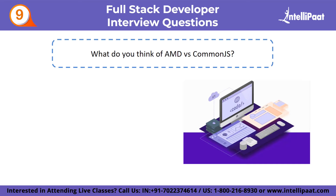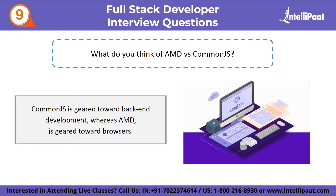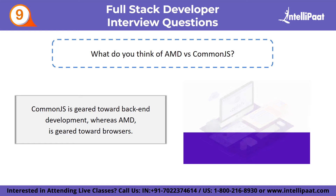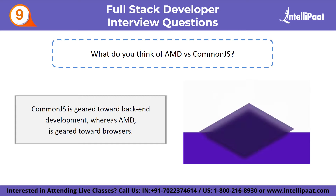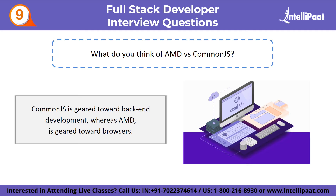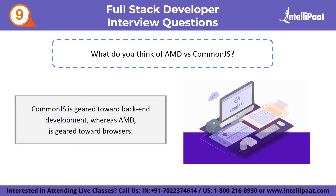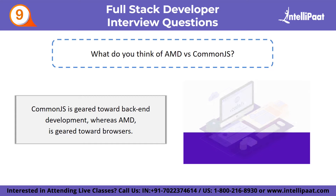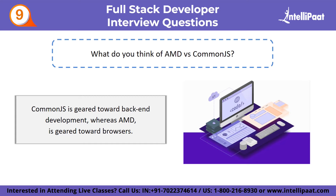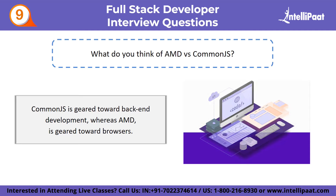Ninth advanced question: what do you think of AMD vs CommonJS? Both are methods for implementing a module system, which was not native to JavaScript until ES2015. AMD — Asynchronous Module Definition — is obviously asynchronous whereas CommonJS is synchronous. CommonJS is geared towards back-end development whereas AMD, with its support for asynchronous module loading, is geared towards browsers. CommonJS syntax is more akin to import statements in other languages, and there is less context-switching overhead when switching between client-side and server-side JavaScript development.